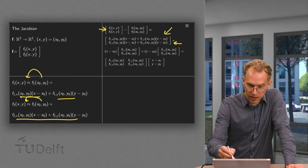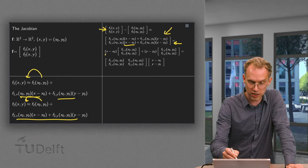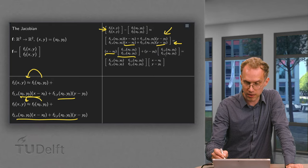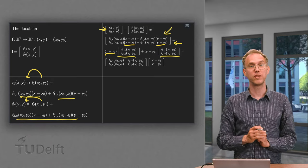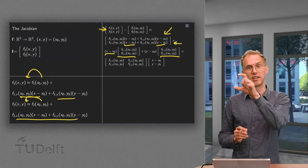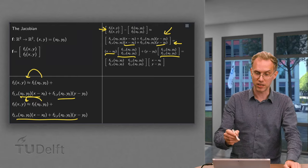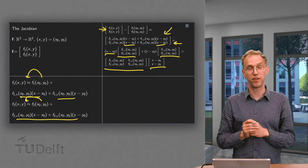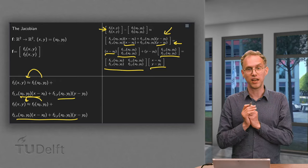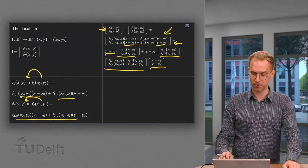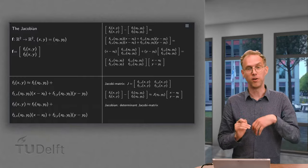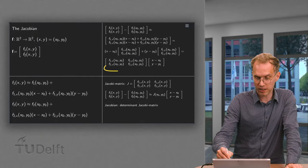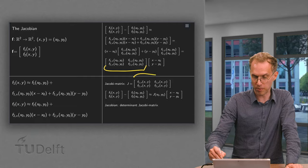We can factor out (x minus x₀) to get (x minus x₀) times some vector, plus (y minus y₀) times some other vector. We have a scalar times a vector plus a scalar times a vector, so we can write this as a matrix times a vector. We have written f minus f at the point as a matrix times a vector, and this motivates us to introduce the so-called Jacobi matrix.